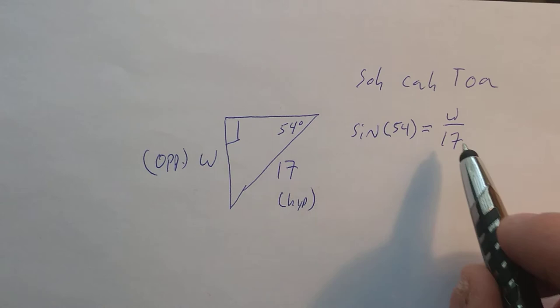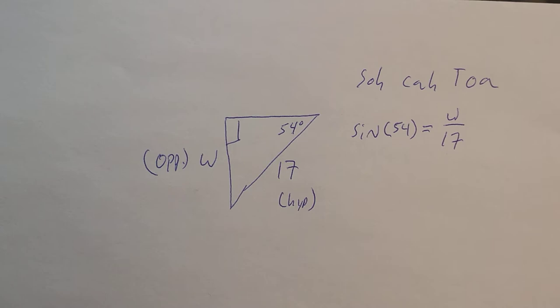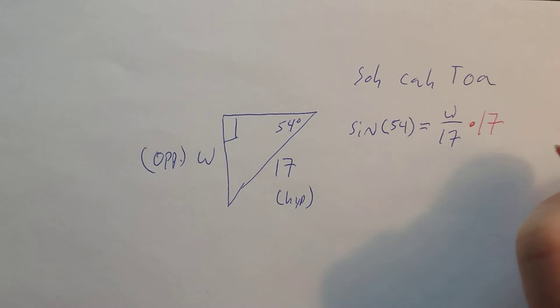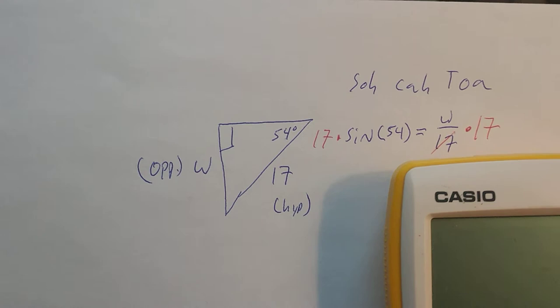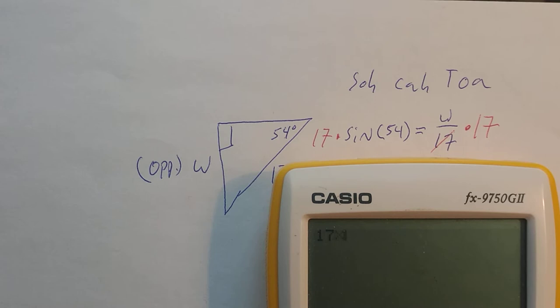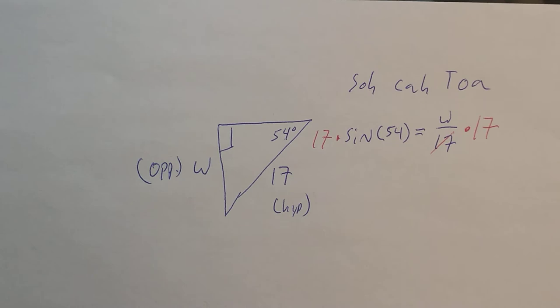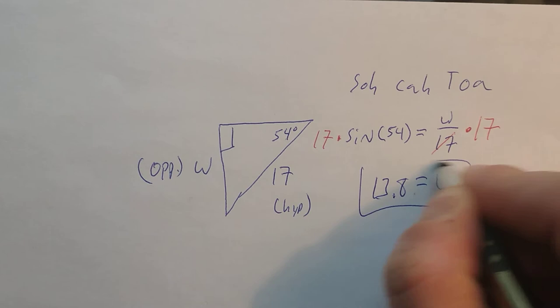So that's how I set up my algebra. We have to get that W by itself. We're going to multiply both sides by 17 — that cancels the denominator. So we get 17 times the sine of 54. If you need a scientific calculator, you can Google 'scientific calculator' and one will come up. So 17 times sine of 54 is about 13.8, and that is my solution.